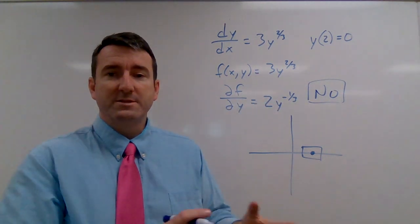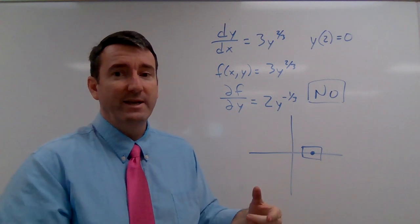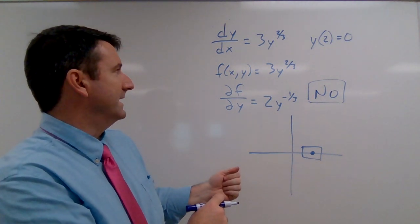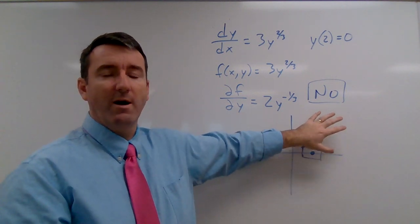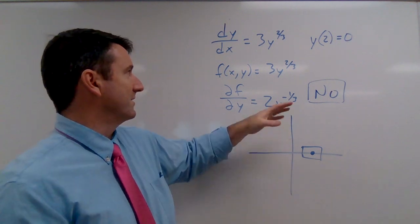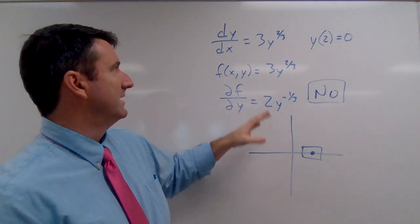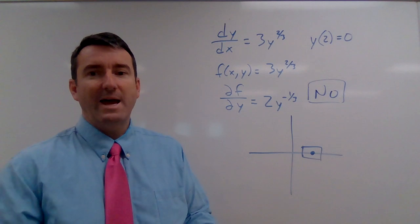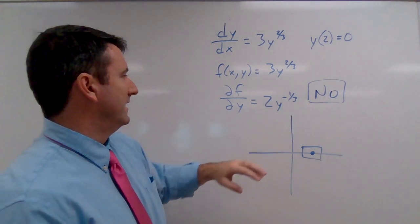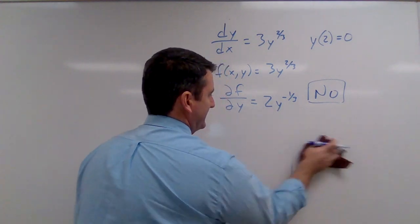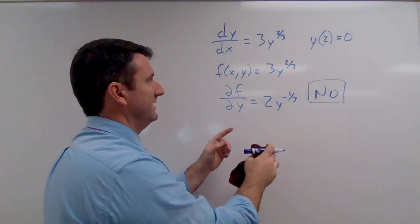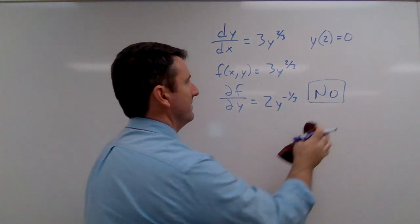Now, it's important to note that that doesn't mean that there's not a unique solution. It just means that our theorem can't be used to imply that. As it turns out, this initial value problem has more than one solution. But we can't tell that. We can't really tell anything from this theorem if both of these conditions aren't satisfied.